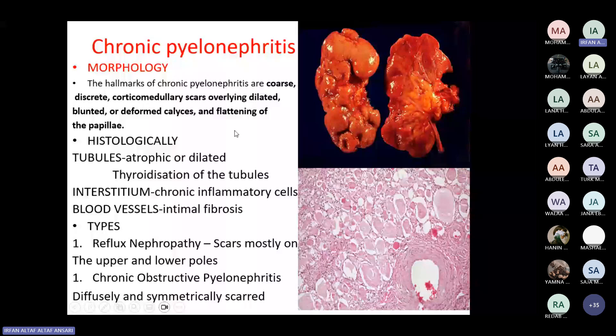In reflux nephropathy, scars are mostly on the upper and lower poles because the backflow pressure of urine comes to the pelvicalyceal system and goes to the two poles first — this is pressure nephropathy. While in chronic obstructive pyelonephritis, when there is obstruction and pyelonephritis, you see a diffusely symmetrically scarred kidney.